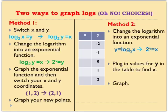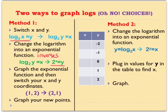So if I take this logarithmic function, log base 2 of x equals y, and change that to log base 2 of y equals x — switching to find the inverse — I'm going to rewrite it as an exponential function. These two are now inverse functions. So whenever I graph that exponential, I just get a table of values and then switch them, and that gives me the coordinates of my new logarithmic graph.